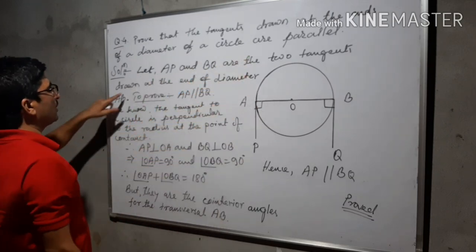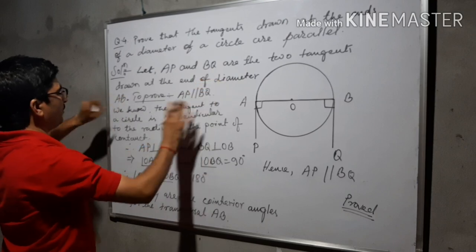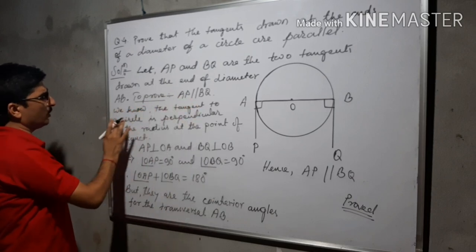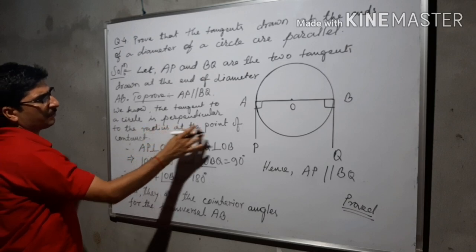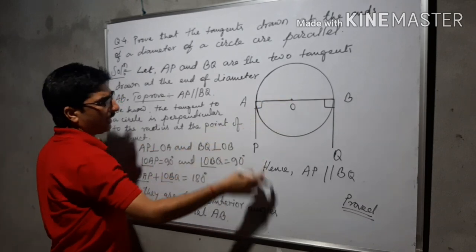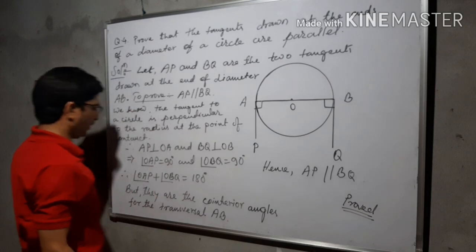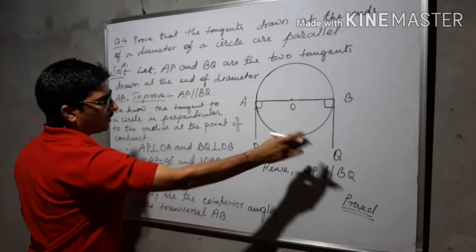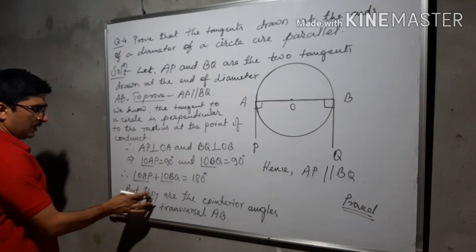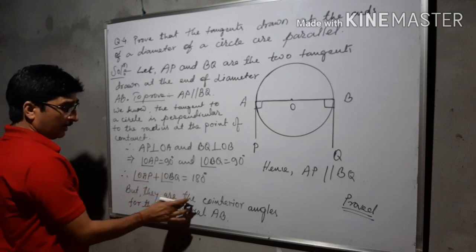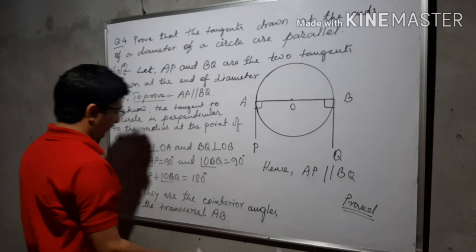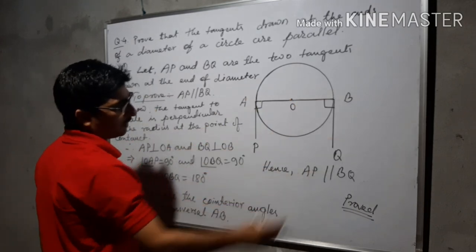Let AP and BQ be the two tangents drawn at the ends of diameter AB. To prove: AP is parallel to BQ. We know that the tangent to a circle is perpendicular to the radius at the point of contact. Therefore AP is perpendicular to OA and BQ is perpendicular to OB. So angle OAP equals 90 degrees and angle OBQ equals 90 degrees. Adding: angle OAP plus angle OBQ equals 180 degrees. But they are co-interior angles for the transversal AB. Therefore AP is parallel to BQ.